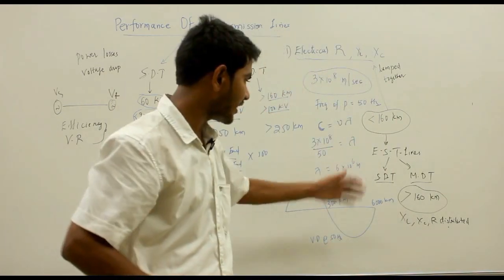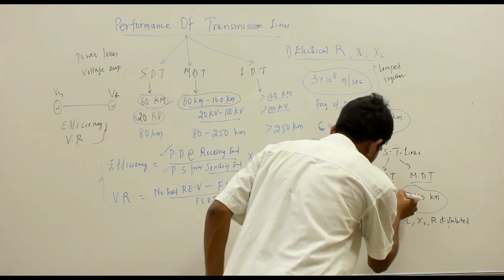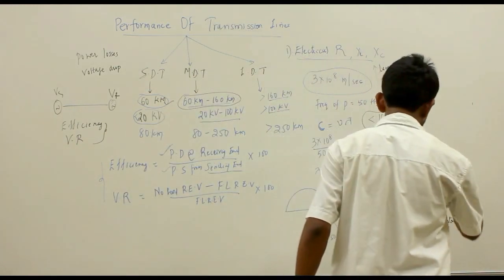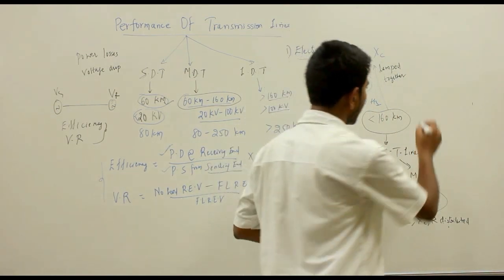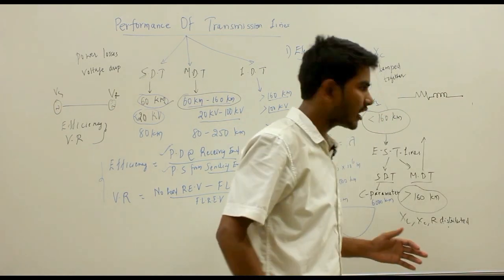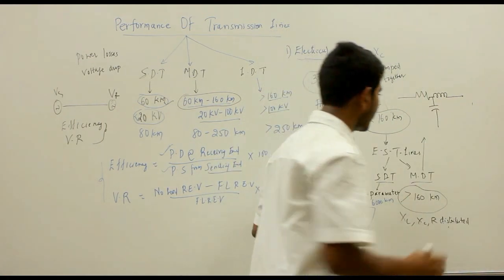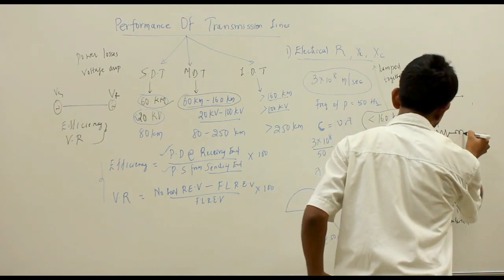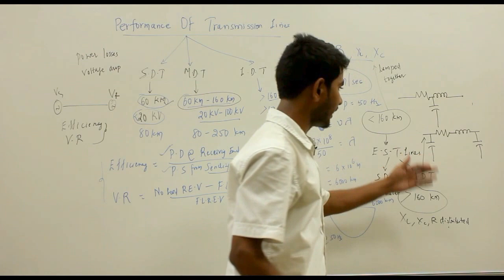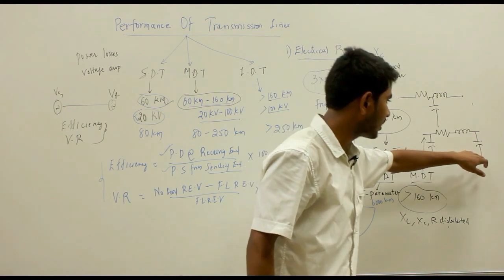In the short distance transmission line, the capacitance parameter is neglected, which is the reason we do not see the Ferranti effect in short distance transmission lines. In the medium distance transmission line, the capacitance is lumped — it can be placed at the middle of the line with resistance and inductance on either side, forming a T-configuration, or each half of the capacitance can be placed at the ends of the line forming a pi configuration.